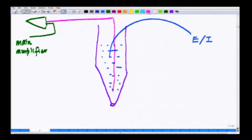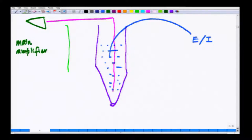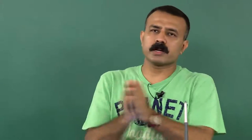Inside the patch electrode you put a silver electrode. The silver electrode is connected to something called a head stage amplifier, or the initial amplifier, and from here it goes to the main amplifier. Here you have the main amplifier and the ground electrode. The way it works: there are two amplifiers - one is the small head stage amplifier which picks up all the signals, then it transmits the signal to the main amplifier. In the main amplifier, all these analog signals are being processed.